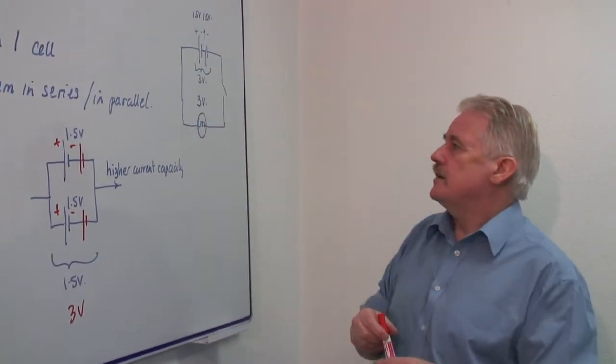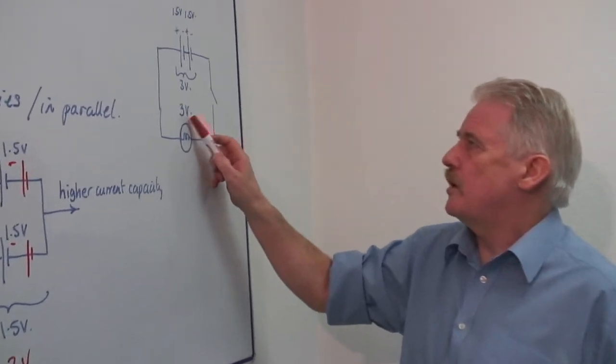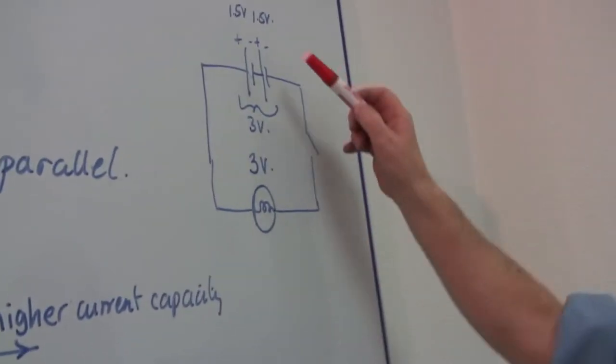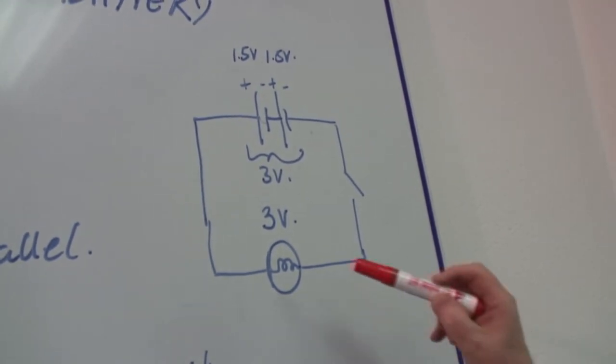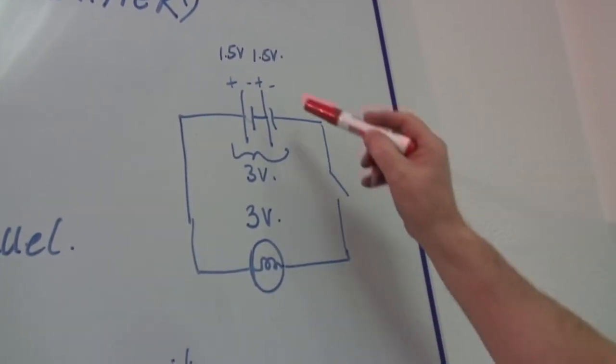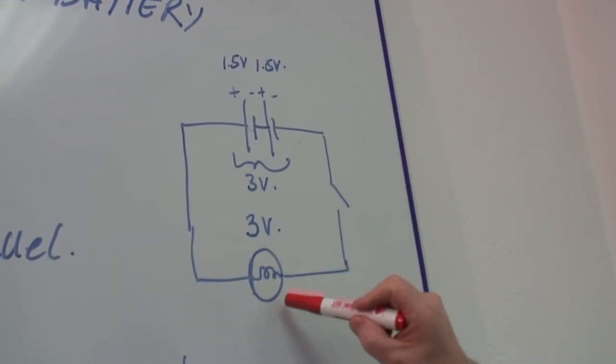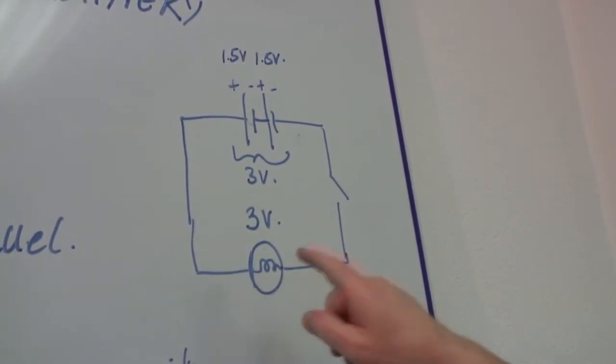In a circuit of this kind, here we've got a 3 volt bulb. It would be no good putting a 1.5 volt cell in that. So we need 2 cells, each of 1.5 volts, to drive a 3 volt lamp.